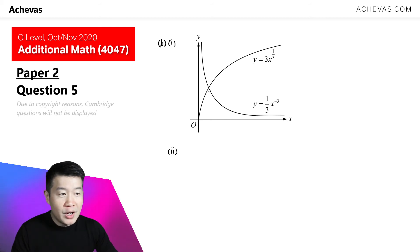For the x-coordinate of the intersections between the two graphs, I can solve this algebraically by doing a simultaneous equation. So for the x-coordinate, which is actually the coordinate of this point, I'm going to let 3x to the power of 1 over 3 be equal to 1 over 3 times x to the power of minus 3.